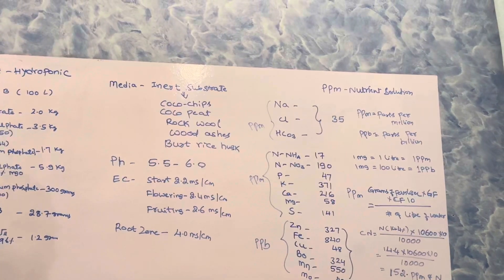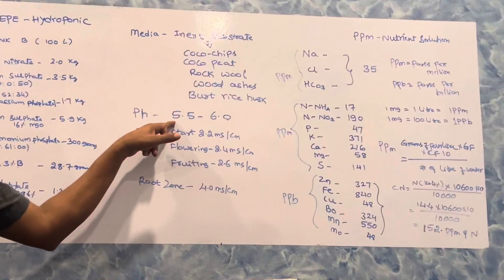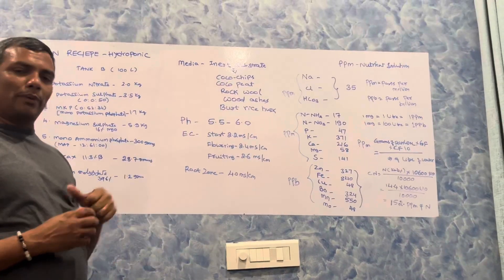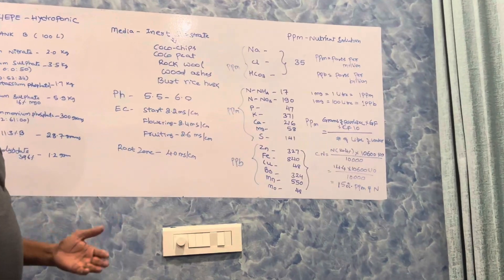Then pH: we should maintain a pH of 5.5 to 6. Even 5.2 or 5.3 is also better, because most of the micronutrients dissolve and absorb at this pH.